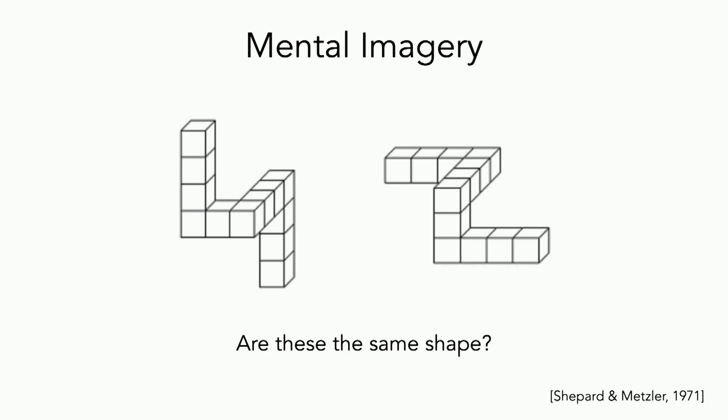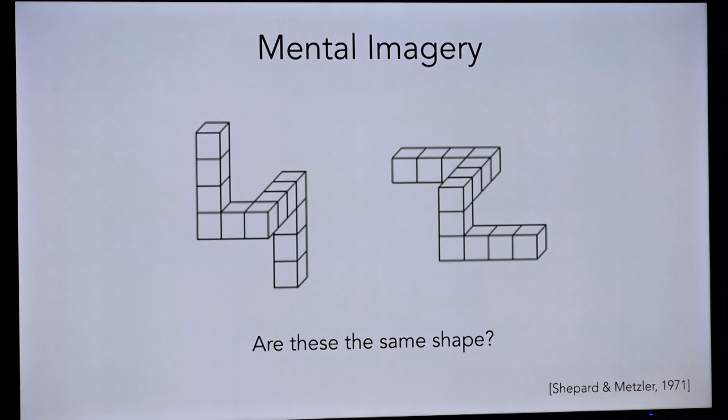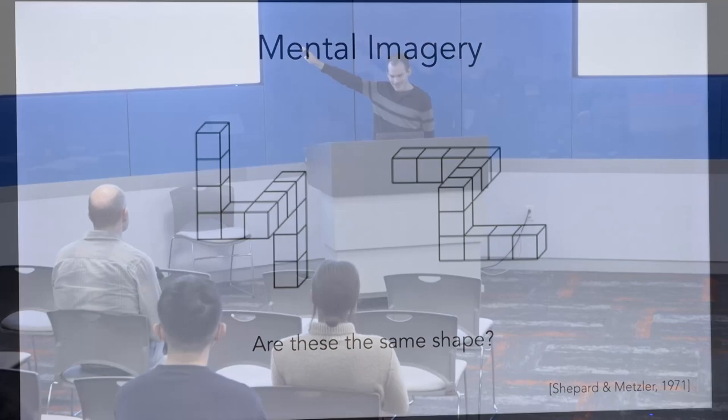One of the famous studies that demonstrated this was from Shepard and Metzler, 1971, on mental rotation. They asked participants to look at two shapes and answer whether they're the same shape under some rotation. Why don't you try that in the audience right now? Are these two shapes the same under some rotation — can you rotate one of the shapes to be the same as the other? Who thinks they're the same? Raise your hand.